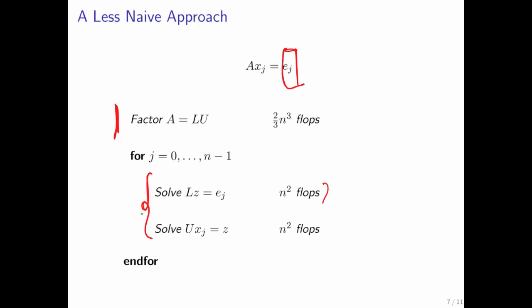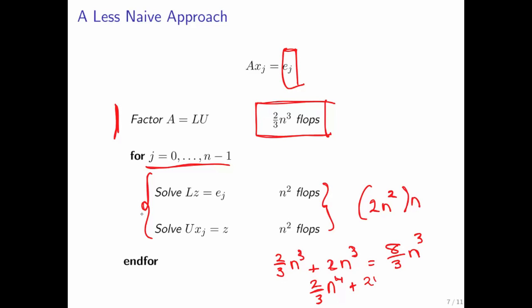What's the cost then? Well, here we do perform two n squared floating point operations per column. So we need to do that n times. And then we have to add to that the cost of factoring A once. So the total cost then becomes 2 thirds n cubed plus 2 times n cubed, which, if you work it out, is 8 thirds n cubed. So clearly we're doing much better because previously we were looking at 2 thirds n to the fourth. But it turns out we can do slightly better yet. And let's have a look at that.